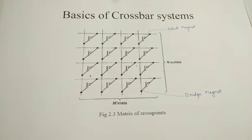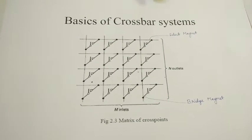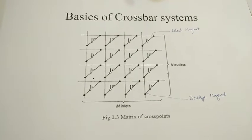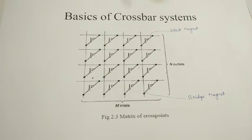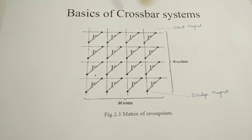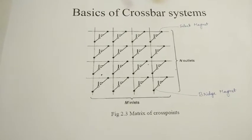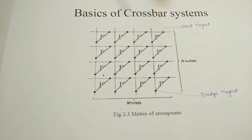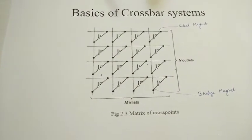Hello students, we are going to study about the basics of crossbar systems. In the earlier days, one person to another person were connected by using a manual operator. Those manual operators were replaced by relays, which were very uneconomic. A scientist named G.A. Bitterlander around 1917 invented a crossbar system.